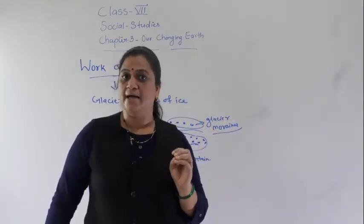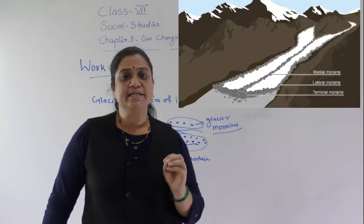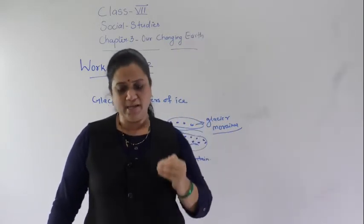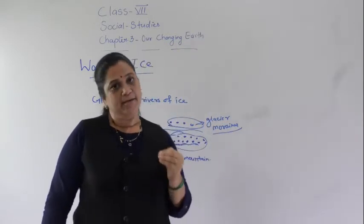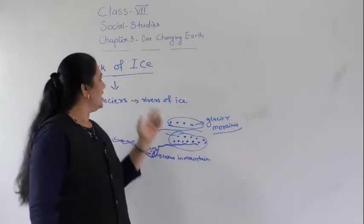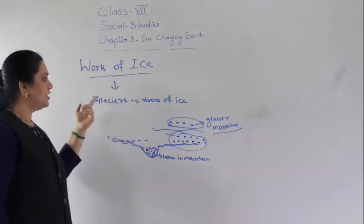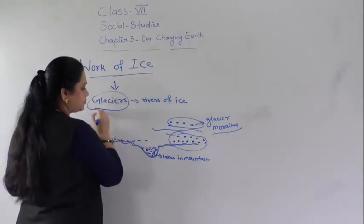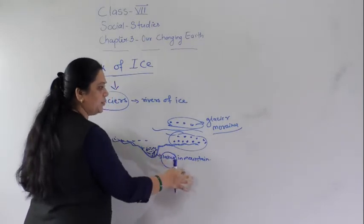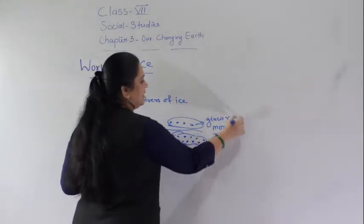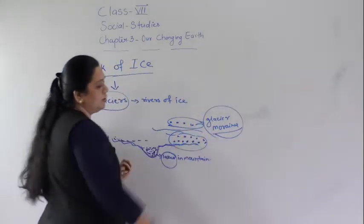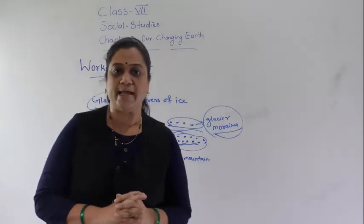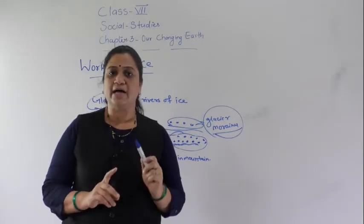These places in the mountains are called glacier moraines. Glacier moraines are the deposited material brought down by the glacier. This way, ice forms glaciers, beautiful lakes in the mountains, and glacier moraines — these three landforms are formed by the work of ice.